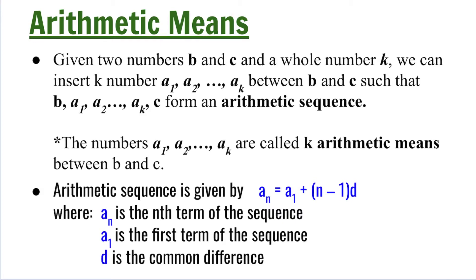In our previous lesson, we learned that an arithmetic sequence is given by the formula a sub n is equal to a sub 1 plus n minus 1 times d, where a sub n is the nth term, a sub 1 is the first term, and d is the common difference. We will use this formula in determining arithmetic means.